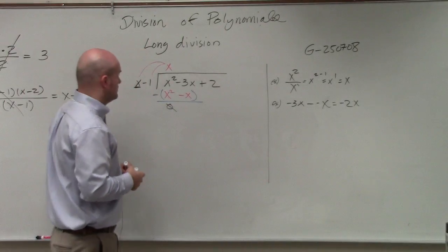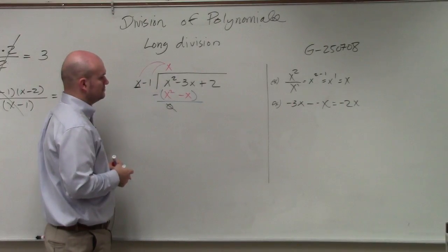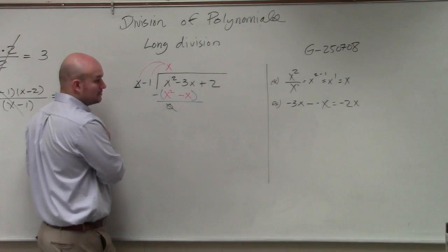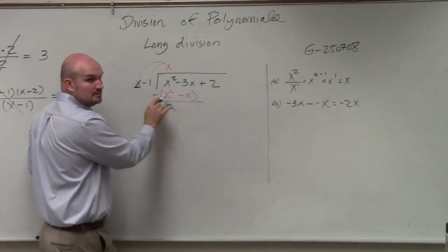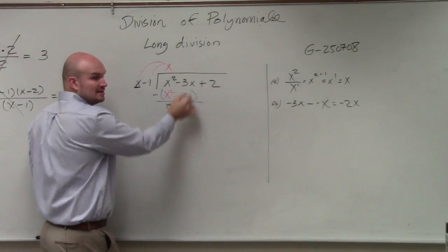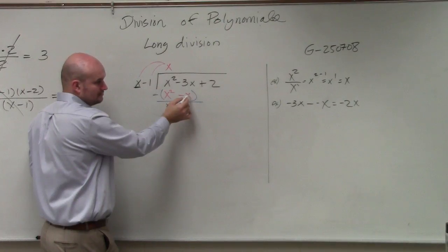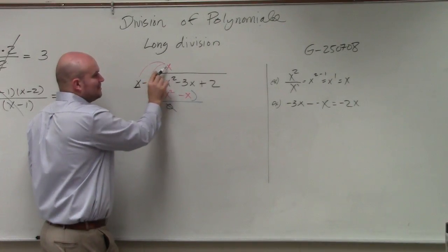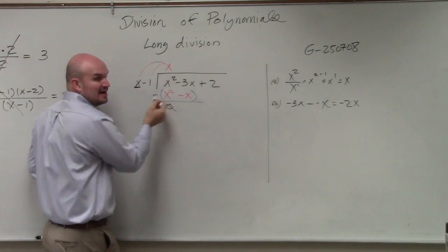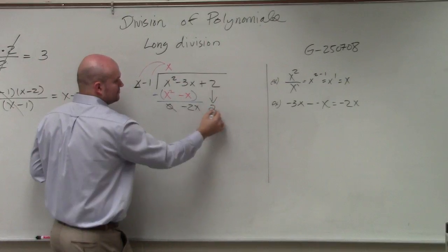Student asks: why would it be minus x — like if it was minus 2, would it be minus 2x? I multiplied x times x, which gave me x squared, and x times negative 1 gives me negative x. So you multiply by both terms and write them below. Therefore I get negative 2x, and then I'll bring down the positive 2.